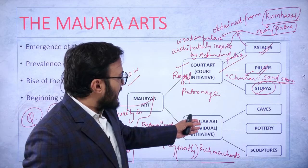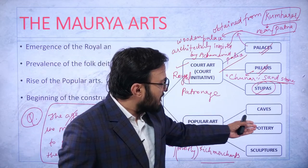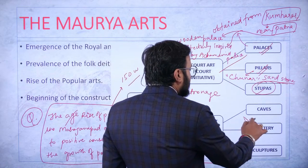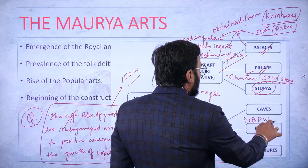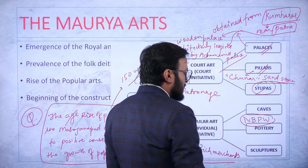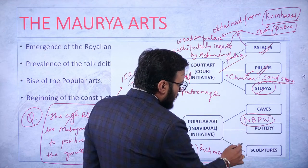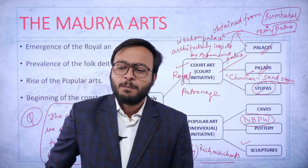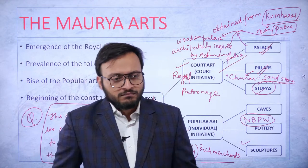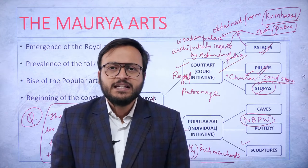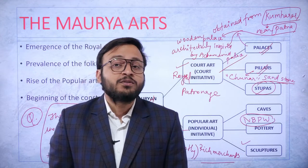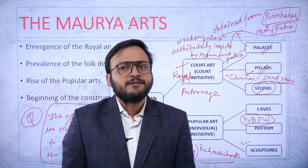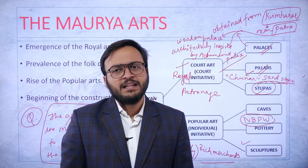Pillars are made up of buff sandstone, also known as Chunar sandstone. Chunar is located in the district of Mirzapur, Uttar Pradesh, and is known for its peculiar type of sandstone with a light creamish appearance on a buff-colored stone. The stupas were constructed using bricks — the innermost part with mud bricks and the outer coverage with burned bricks. For popular art, we have rock-cut caves, Northern Black Polished Ware pottery, and sculptures of folk deities like Yakshas and Yakshinis.